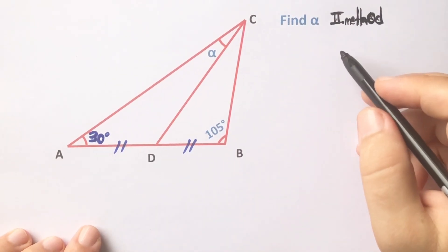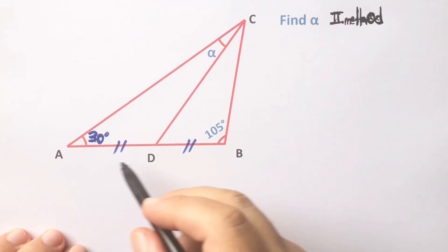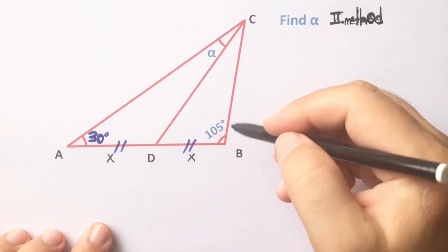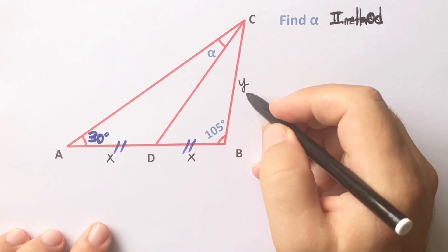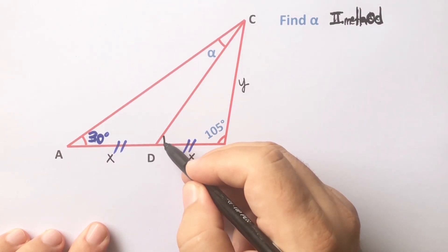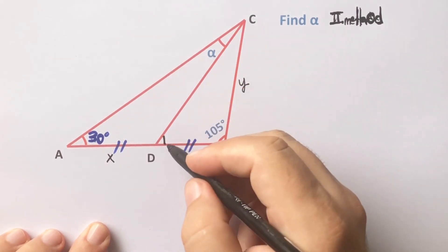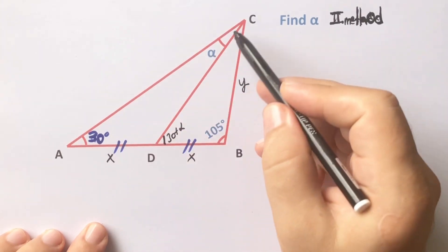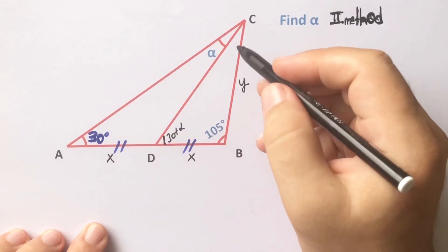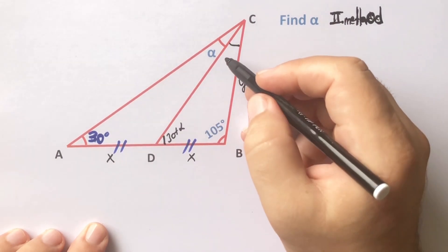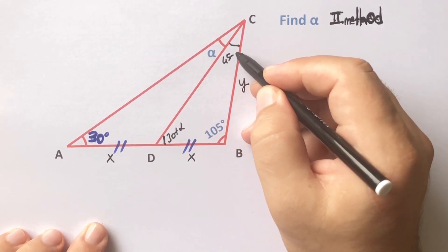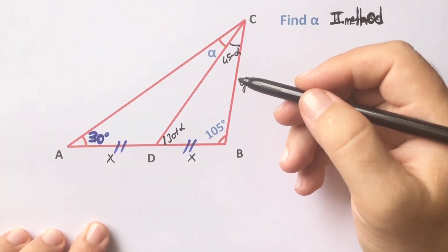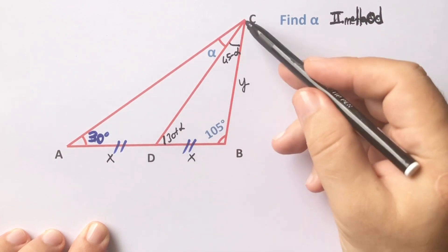This was the first method. Now we will calculate the value of alpha using a second method. Let's call these equal parts x units and this length y units. We know that two interior angles sum equals the exterior angle, and the sum of interior angles equals 180 degrees, so here must be 45 minus alpha.